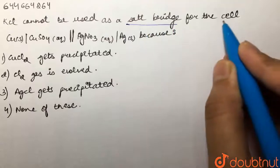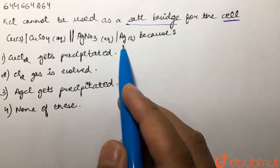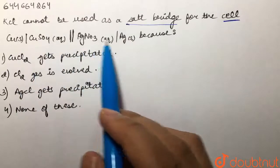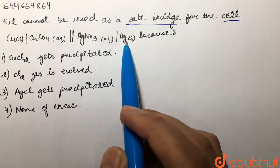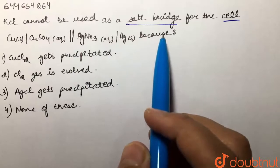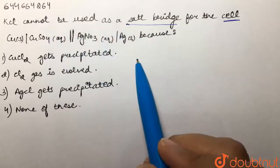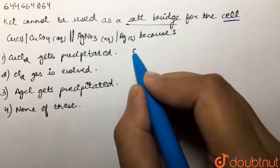The cell given to us is here. Copper is getting converted into Cu²⁺ and Ag⁺ is getting converted into Ag solid. So we are given the cell and we are supposed to tell why KCl cannot be used as a salt bridge for this cell.